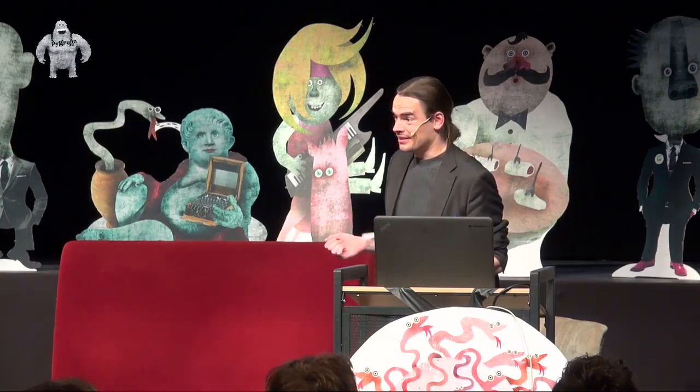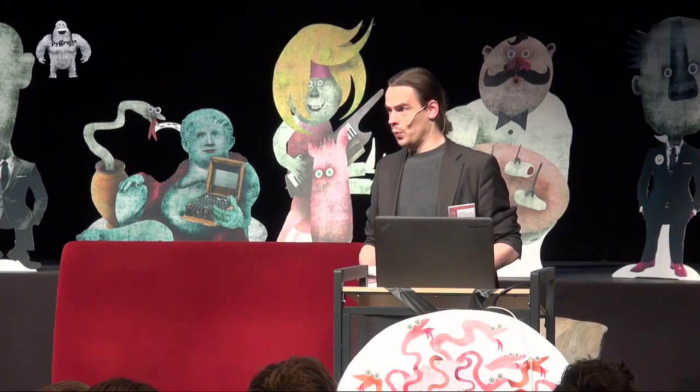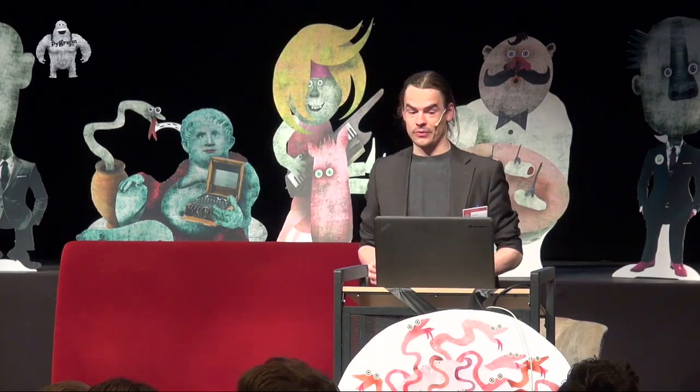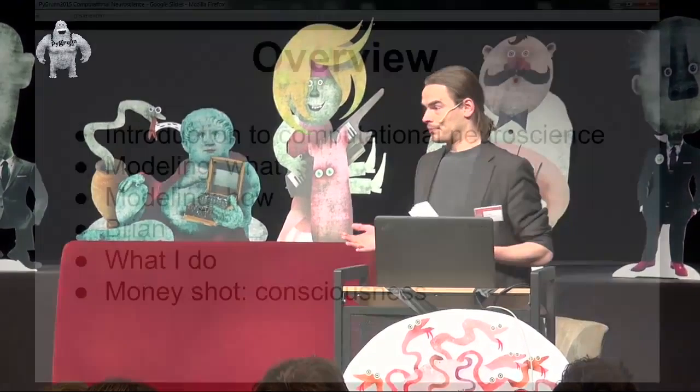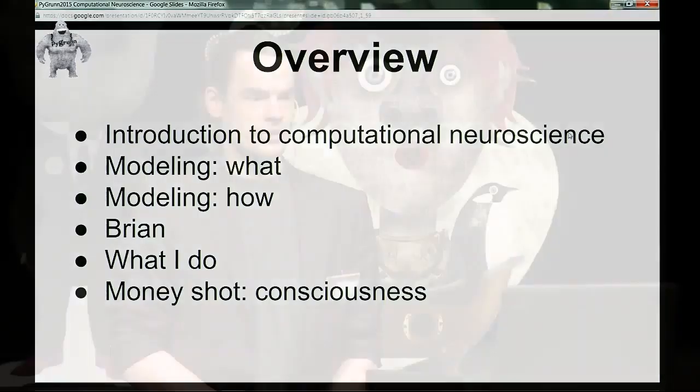My name is Elis. I'm a PhD candidate at the Rijksuniversiteit Groningen, right here in Groningen, at the Faculty of Philosophy, at the Department of Theoretical Philosophy, which is going to be relevant in a while. I hope to be teaching you something about computational neuroscience today. It's going to be a fairly high-level talk because of the audience, mostly software people. However, I already know there's at least one other computational neuroscientist in the room, so I'll have to be careful.